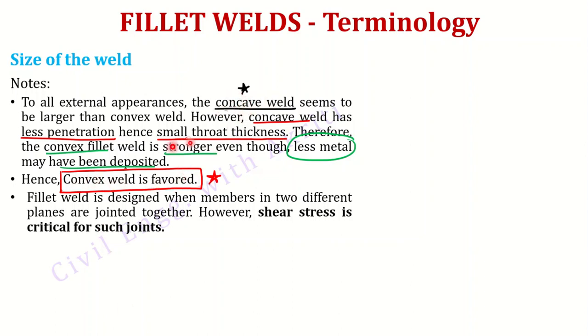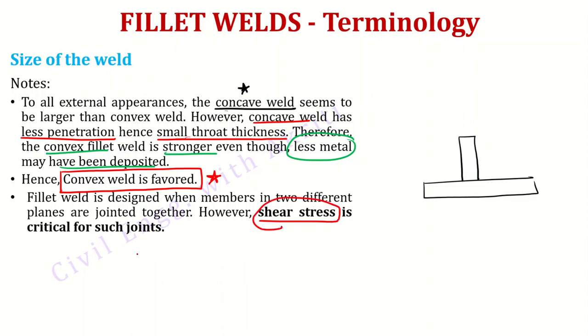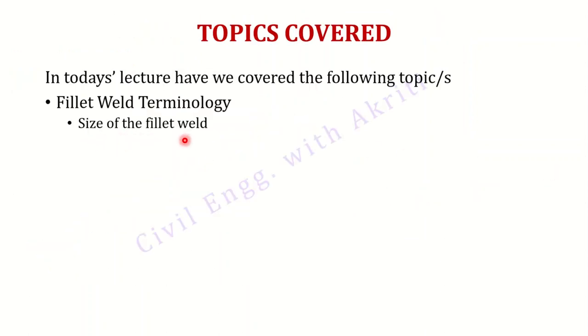Concave welds appear bigger than convex welds, but in reality the penetration and throat thickness are reduced — these are disadvantages. Fillet welds are designed when members in two different planes are joined, but shear stress is critical in fillet welds. I hope this lecture was useful to you. Thank you and stay tuned for more.